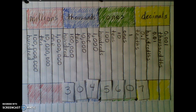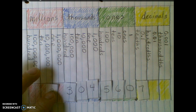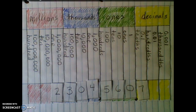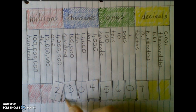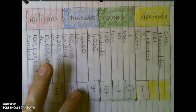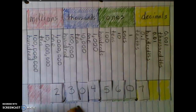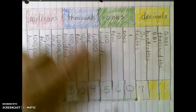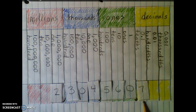Let's build some more. Let's put a two in the millions place. Now we're in the millions place, but we're also starting a new period — the millions period. So put a nice big comma to show that we're going to a new period. Say that number with me: two million — we say the name of the period — three hundred four thousand, five hundred sixty, and seven tenths.